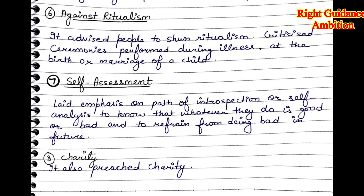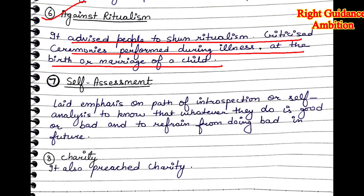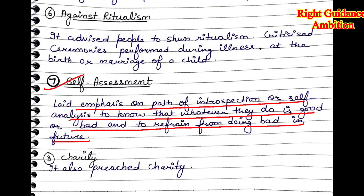The sixth point is against ritualism. It advised people to shun empty rituals — ceremonies performed during illness, at the birth of a child, or at marriage. The seventh point is self-assessment, with emphasis on the path of introspection or self-analysis to know whether what they do is good or bad, to check their journey and know how much improvement they have done and whether their work was right or wrong.